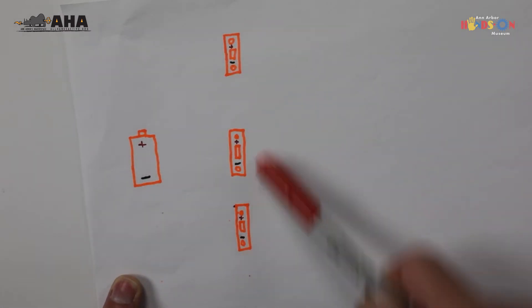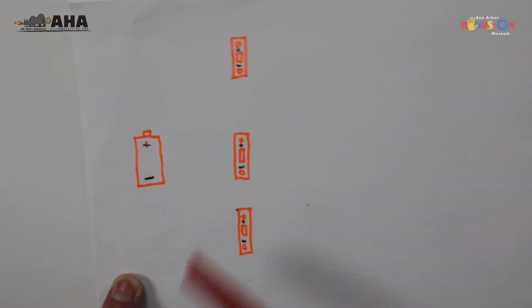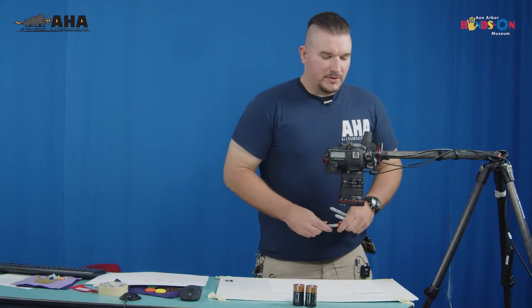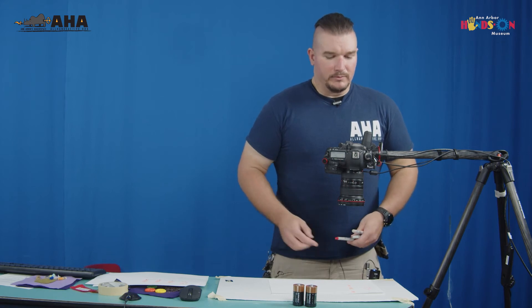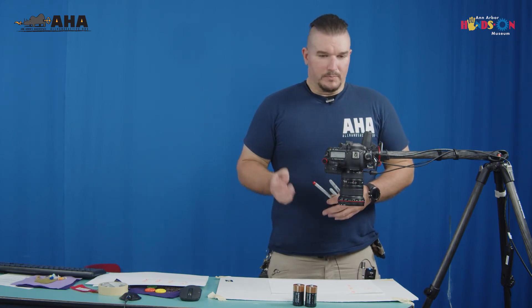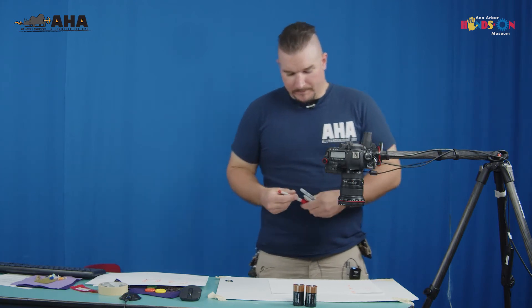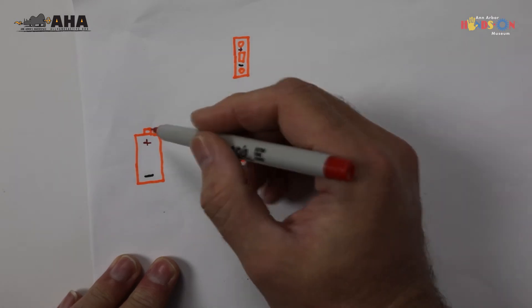We're going to kind of hook these up in, I guess you can call it kind of like a web shape. This might be useful if you can't think of a way to run one continuous strand of LEDs and you wish to branch out from the battery to individual LEDs, which is totally fine and it works great, and I'll show you how to hook these up as best I can.